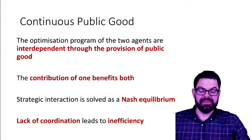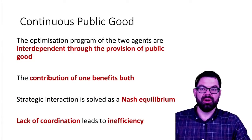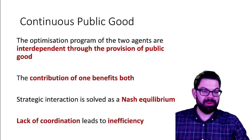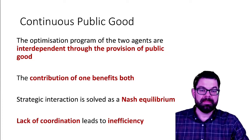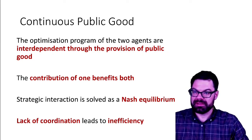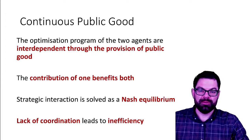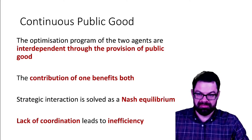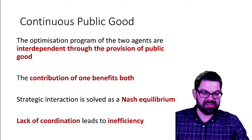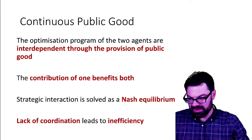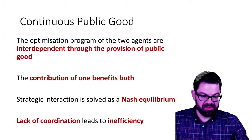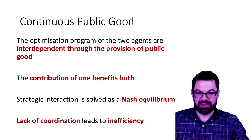In the last video we talked about the free rider problem in public goods provision and we looked at a simple example of a binary public good — the public good can either be produced or it is not produced, and in that case it was produced if at least one person contributes.